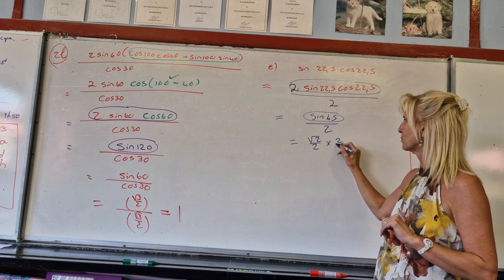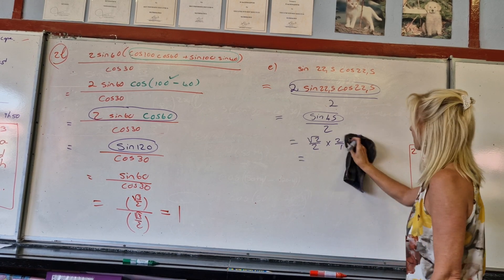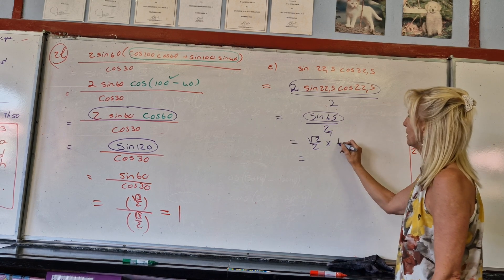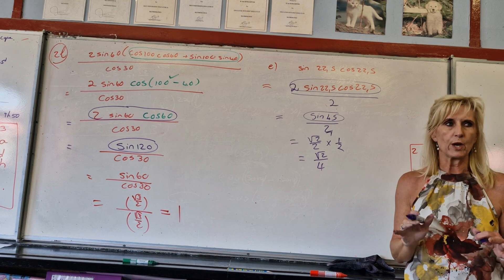So then this will be √2 over 2. Divide by 2 or times with 2 over 1. Oh, 1 over 2. I'm sorry. 1 over 2. So we'll give you √2 over 4. Any which way you do it.